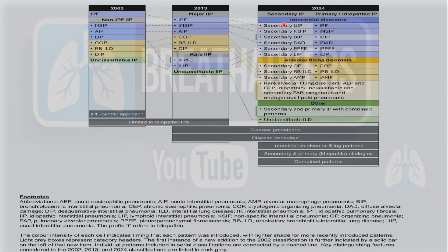The 2025 guidelines also classify IP into interstitial disorders and alveolar filling disorders. Among the alveolar filling, rare alveolar filling disorders include acute eosinophilic pneumonia, chronic eosinophilic pneumonia, secondary BAP, and lipoid pneumonia. There is also an 'other' category that includes unclassifiable ILD and the combination of secondary or primary IP with combined PAP. Disease prevalence and behavior have been enrolled in the interstitial versus alveolar filling pattern, and combined pattern has been discussed.